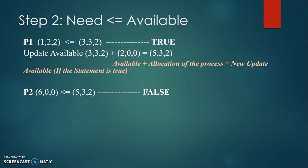Then proceed to process 2, P2. For P2, write down the need: (6, 0, 0). Is it less than the current updated available, which is (5, 3, 2)? Write it down and check one by one. Is 6 less than 5? Definitely false. If one of these numbers is false, automatically the statement is false. Write it down as false and proceed to process 3.